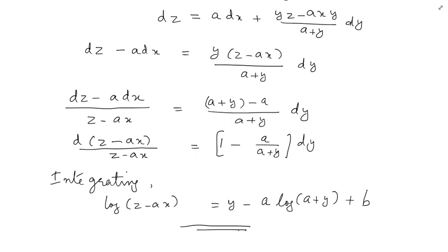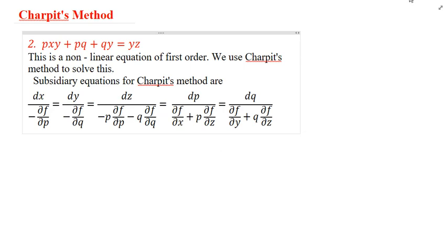To summarize the method: identify the non-linear first-order PDE, rewrite it as f equal to 0, write the Charpit subsidiary equations, find an expression for p or q or a relation connecting them, solve with the original equation to get p and q in terms of x, y, z, substitute into dz equal to p dx plus q dy, then integrate to write the final solution.